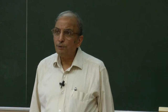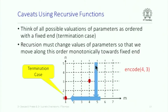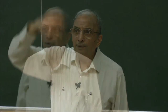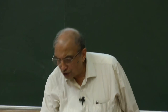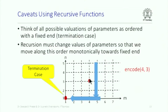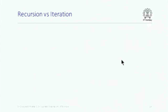Is it possible to do it the other way, where first the value of m changes and then the value of n changes? This depends upon the sequence in which you have written the statements in your program. The point is you cannot have a situation where the value threatens to increase, because if it does, there is no termination. So this is the care you are required to take when solving these problems.